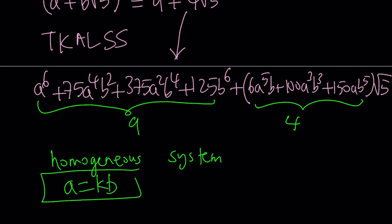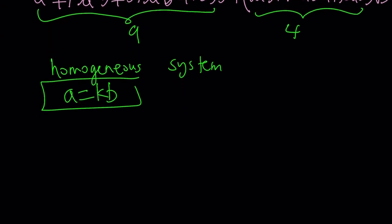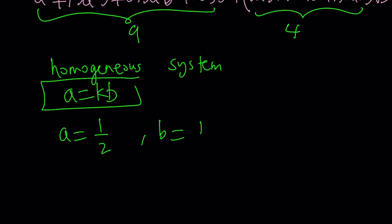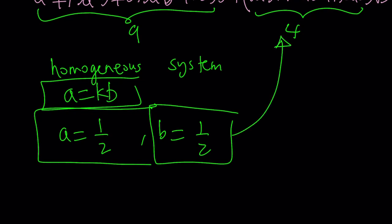If you go ahead and replace a with kb, you're going to get two equations and then factor out the b to the fourth power, divide both equations, it's going to cancel out, so on and so forth. To save you some time and trouble, I did it for you and I got a equals 1 half and b equals 1 half. You can just go ahead and substitute those values and easily verify that they work.